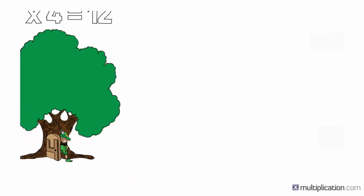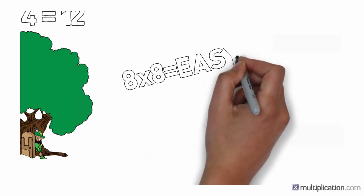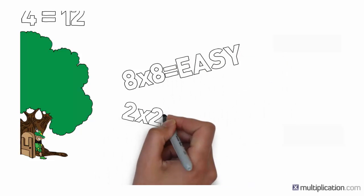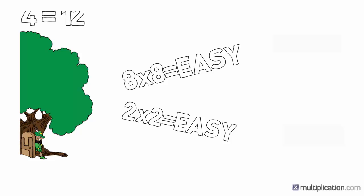We also have a story that goes along with the picture to help anchor the memory. What's cool about our system is eight times eight is just as easy to remember as two times two. It's just another funny picture.